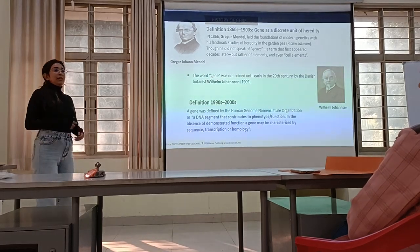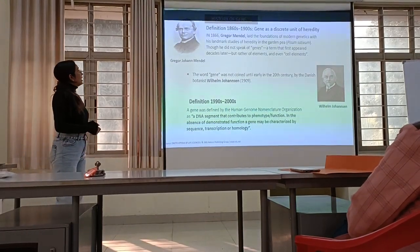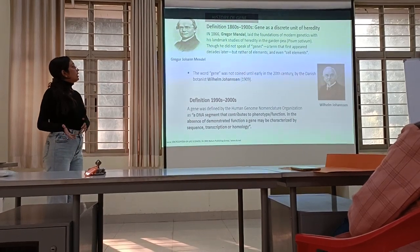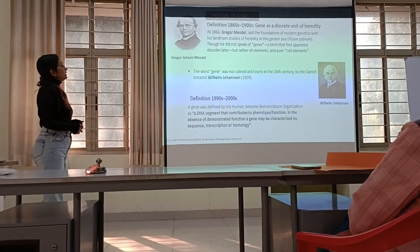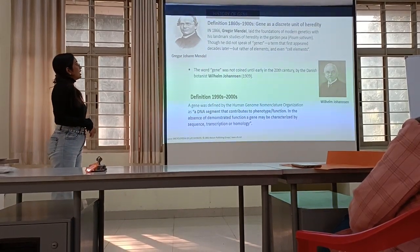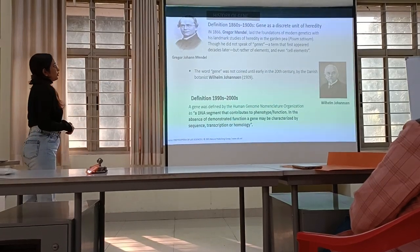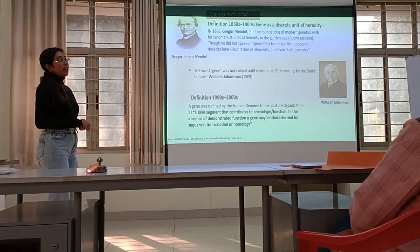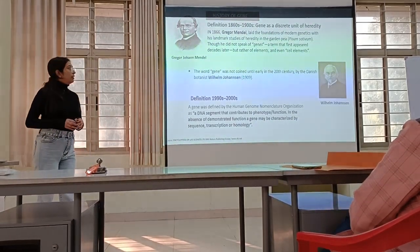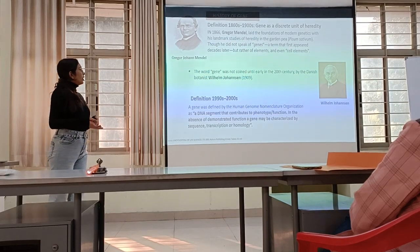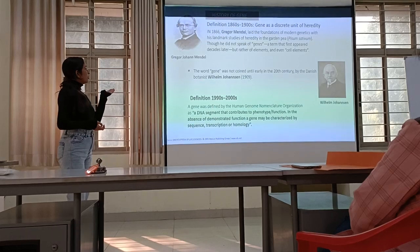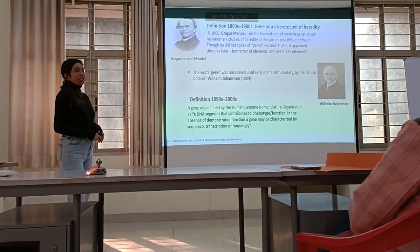First we are going to discuss the basic history of gene. For the first time the definition of gene was given in 1860–1900 by Mendel as a gene and the distinct unit of identity. In 1866, Gregor Mendel laid a foundation of modern genetics with his landmark study of pea garden gene classes. Though he did not speak of gene, he named it as a factor. The word gene was not coined until the early 20th century by Wilhelm Johannsen in 1909.